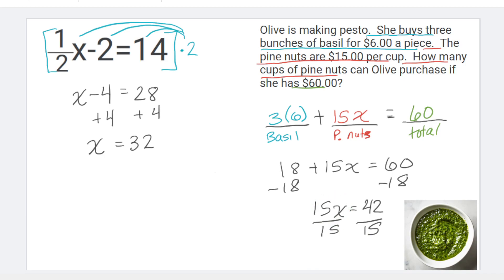There's quite a delay in my sending there. So 42 divided by 15 gives me 2.8. So that means that Olive could purchase 2.8 cups of pine nuts if she has $60.